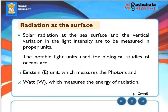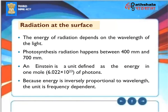Radiation at the Surface: Solar radiation at the sea surface and the vertical variation in light intensity are measured in proper units. The notable light units used for biological studies of oceans are the Einstein (E) unit, which measures photons, and Watt (W), which measures the energy of radiation. The energy of radiation depends on the wavelength of light. Photosynthesis radiation happens between 400 nm and 700 nm. An Einstein is a unit defined as the energy in 1 mole (6.022 × 10²³) of photons. Because energy is inversely proportional to wavelength, the unit is frequency dependent.